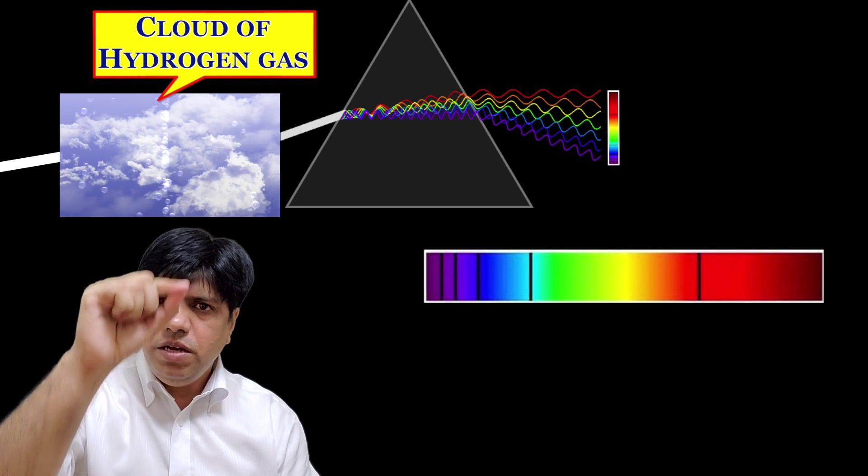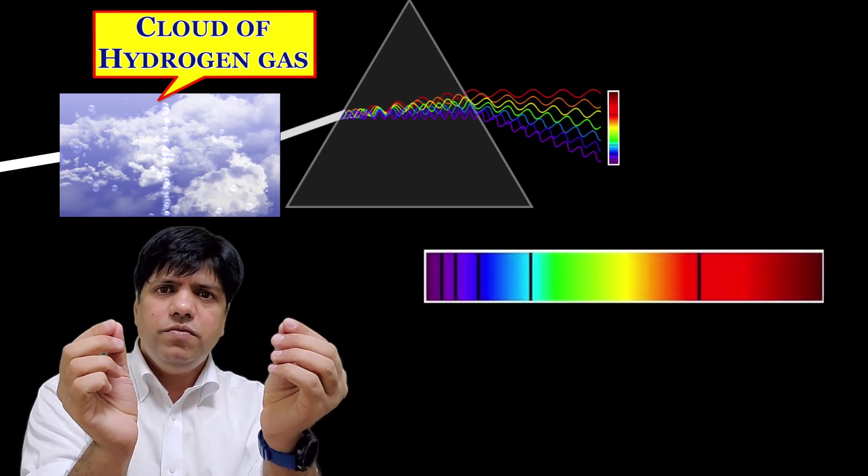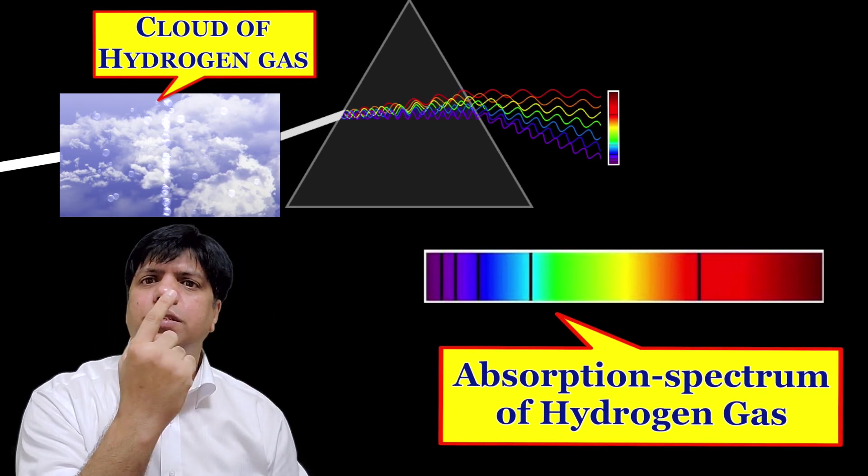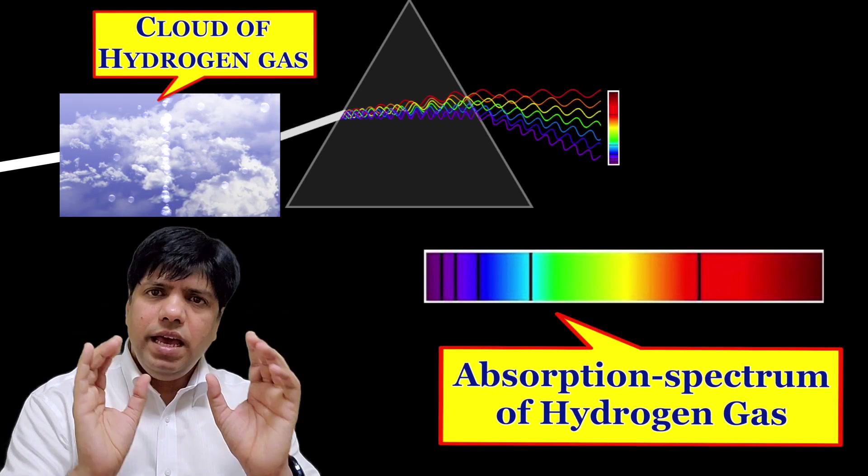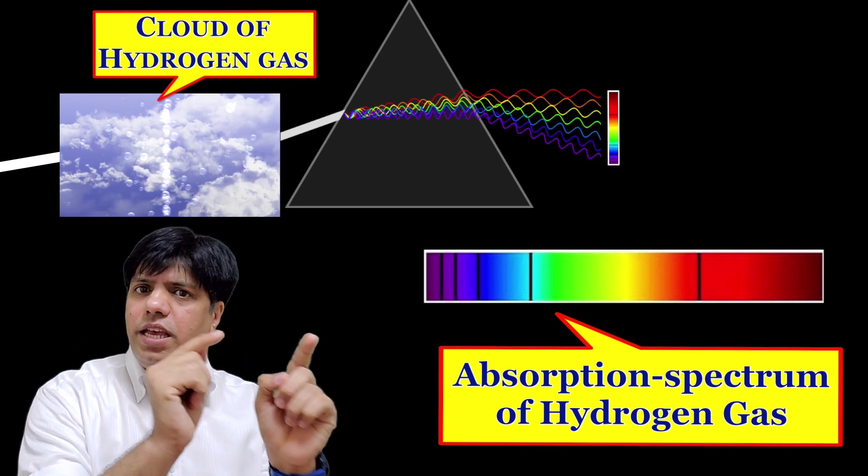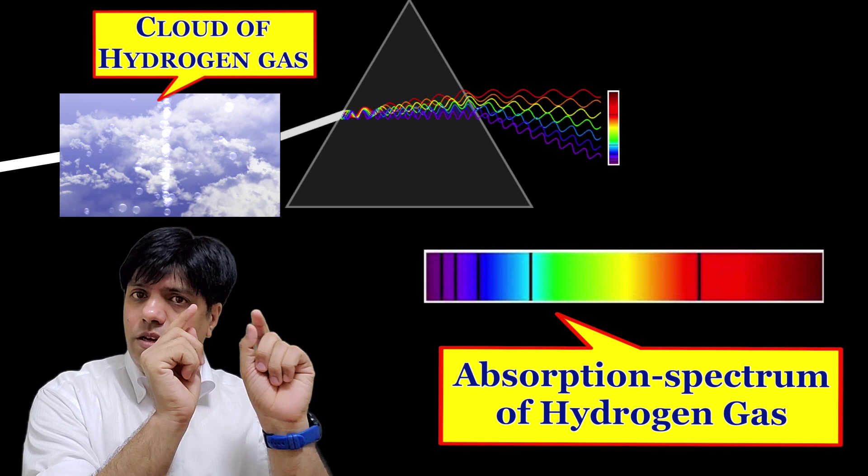you find some lines, you will find this kind of thing. Now this is what you call the absorption spectrum of hydrogen gas. Every time light passes through hydrogen gas you get exact same lines in exact same places on the spectrum.